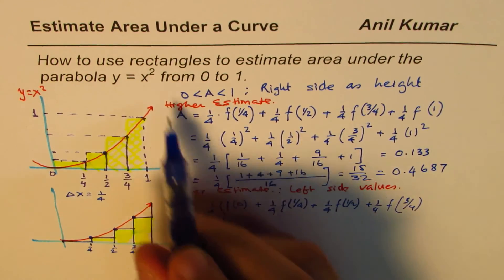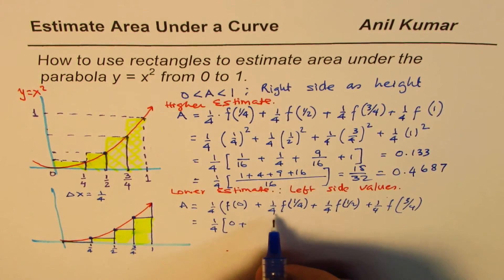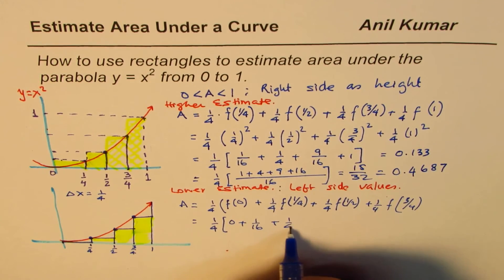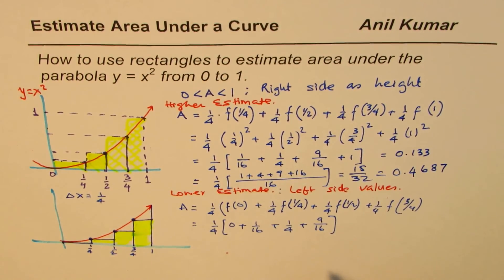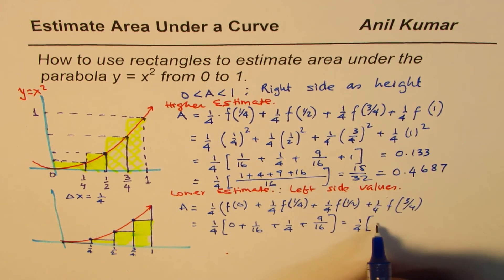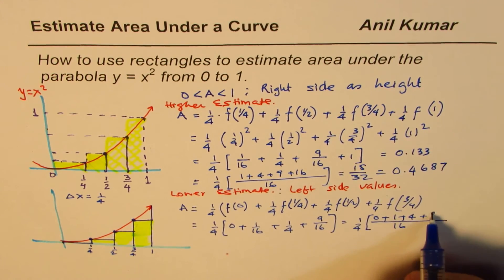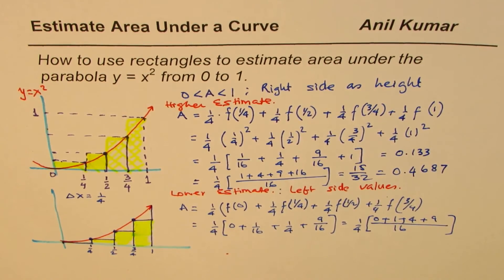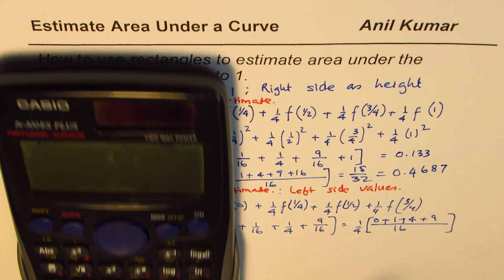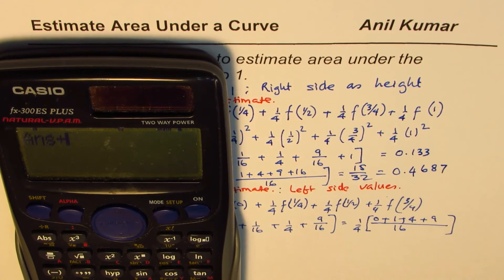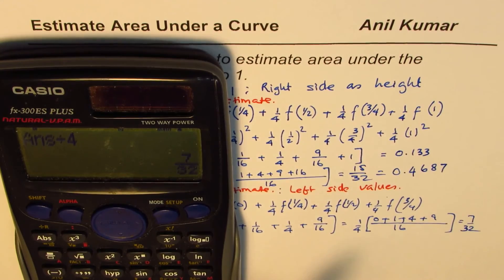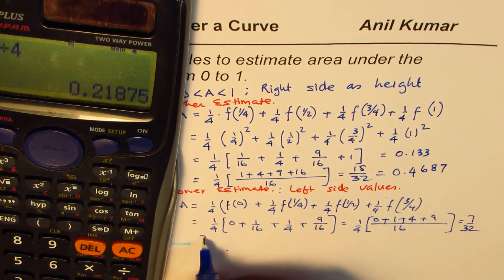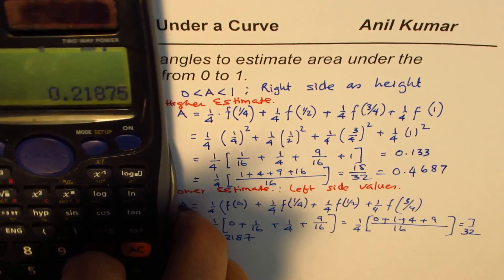Factoring out one-fourth, the value of the function at zero is 0, at one-fourth is 1/16, at one-half is 1/4, and at three-fourths is 9/16. So we have one-fourth times (0 + 1/16 + 4/16 + 9/16). Using 16 as the common denominator: 0 + 1 + 4 + 9 equals 14, divided by 16, divided by 4, giving us 7/32, which equals 0.2187.